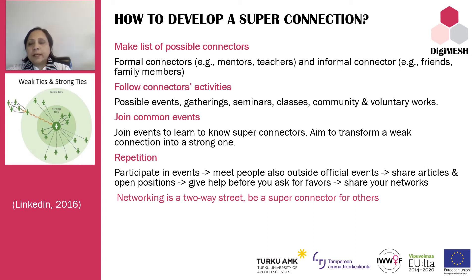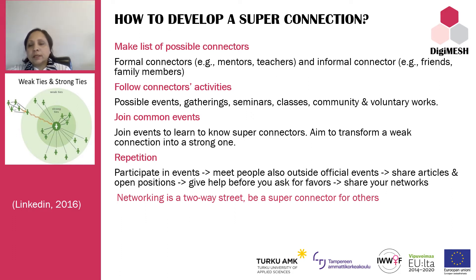How to develop a super connection: to develop a super connection, it is important to make a list of possible super connector people. You need to identify the important people for you from your informal and formal connections. For example, from formal connections: friends of families, friends of children's families, voluntary work, hobbies, and community friends. From informal connections, super connectors might be mentors, language teachers, facilitators, and colleagues. After making the list, it would be good to follow their activities such as events, gatherings, seminars, classes, and community and voluntary works.